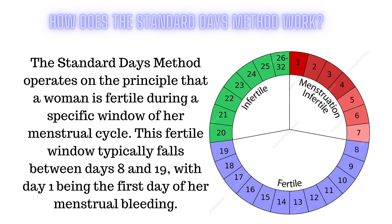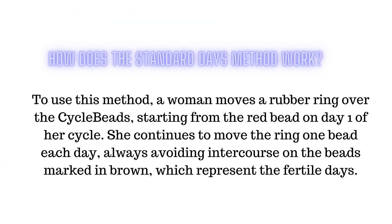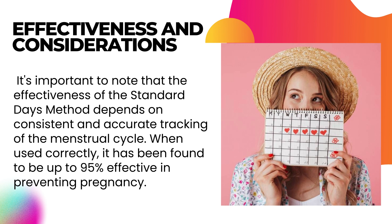How does the standard days method work? The standard days method operates on the principle that a woman is fertile during a specific window of her menstrual cycle. This fertile window typically falls between days 8 and 19, with day one being the first day of her menstrual bleeding. To use this method, a woman moves a rubber ring over the cycle beads starting from the red bead on day one of her cycle, moving the ring one bead each day, and always avoiding intercourse on the beads marked in brown, which represent the fertile days.